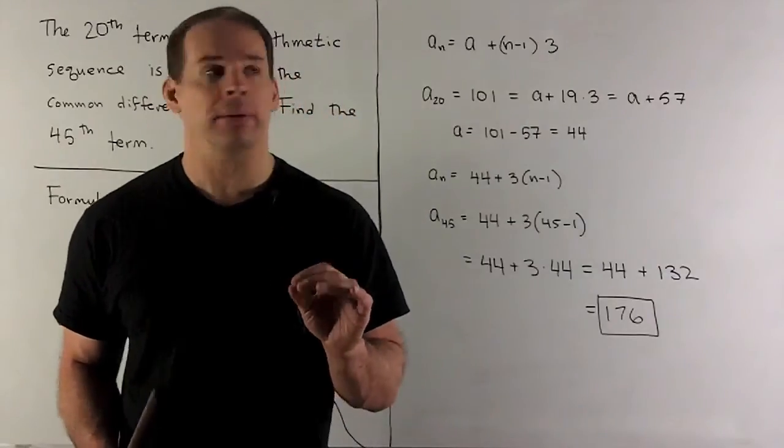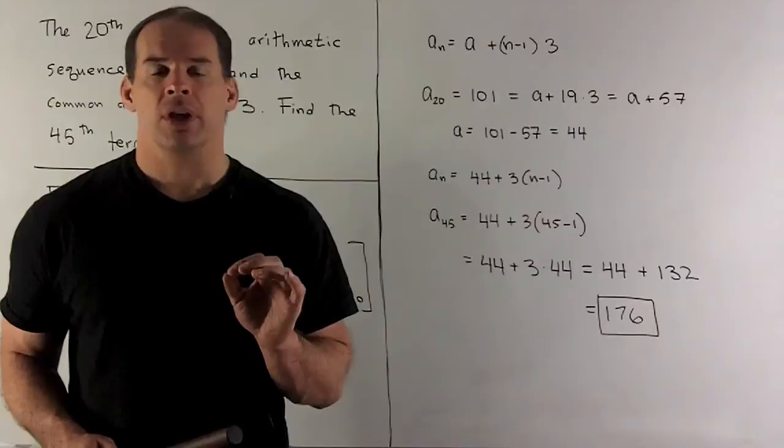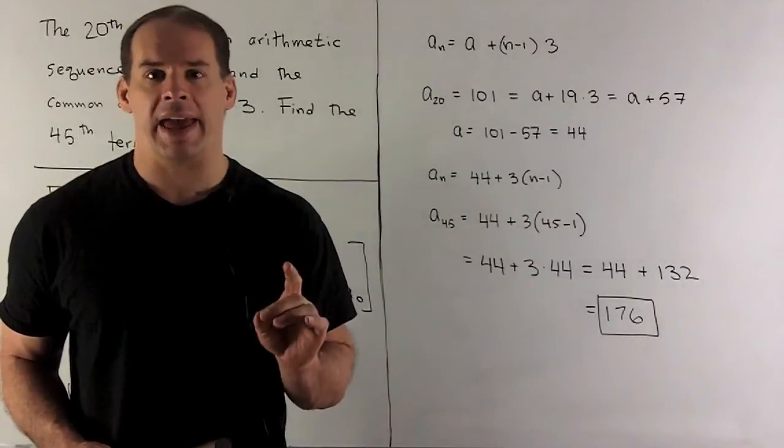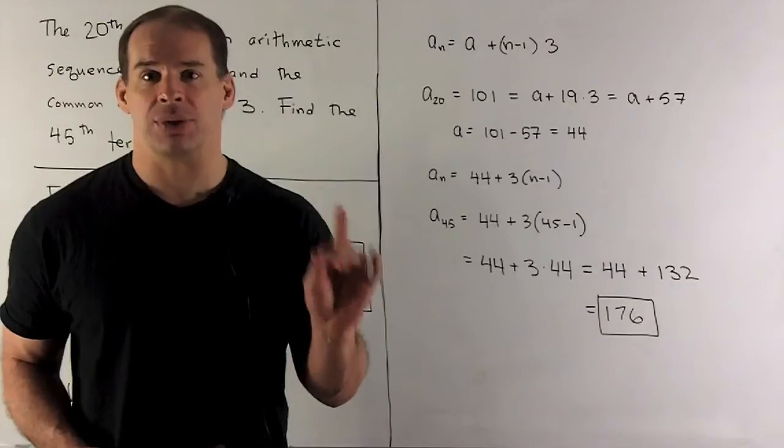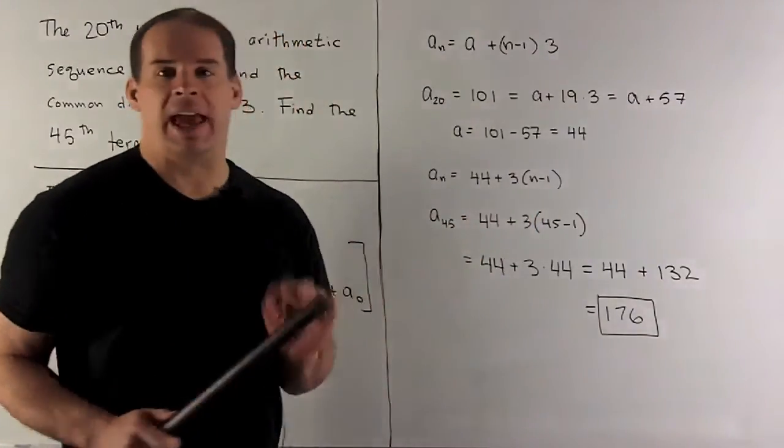I'll put the common difference in, and then I want to take a look at a_20. So that's equal to 101, but it's also going to be equal to a plus 19 times 3 by our general equation, so that's going to be a plus 57.